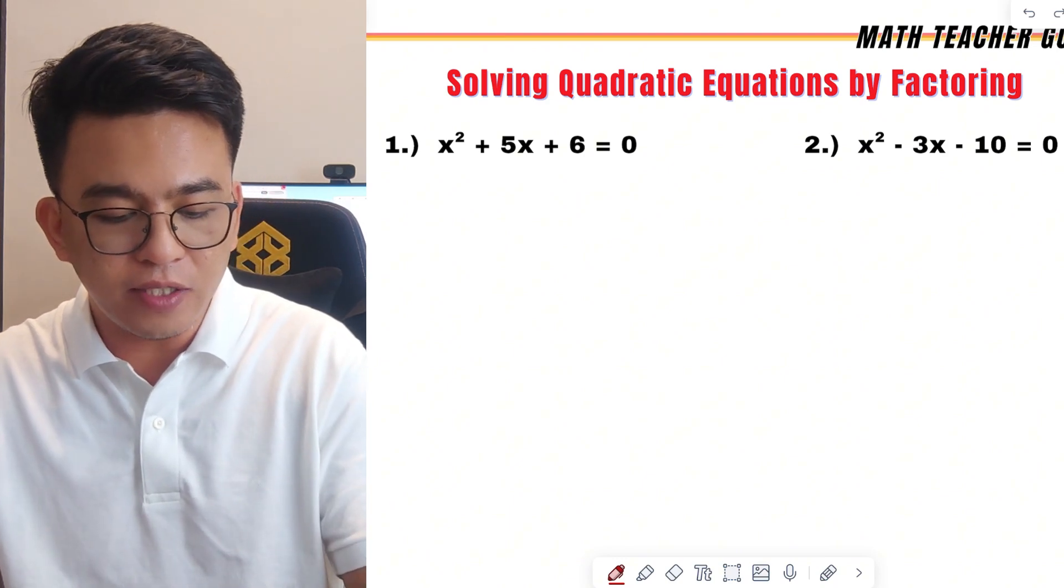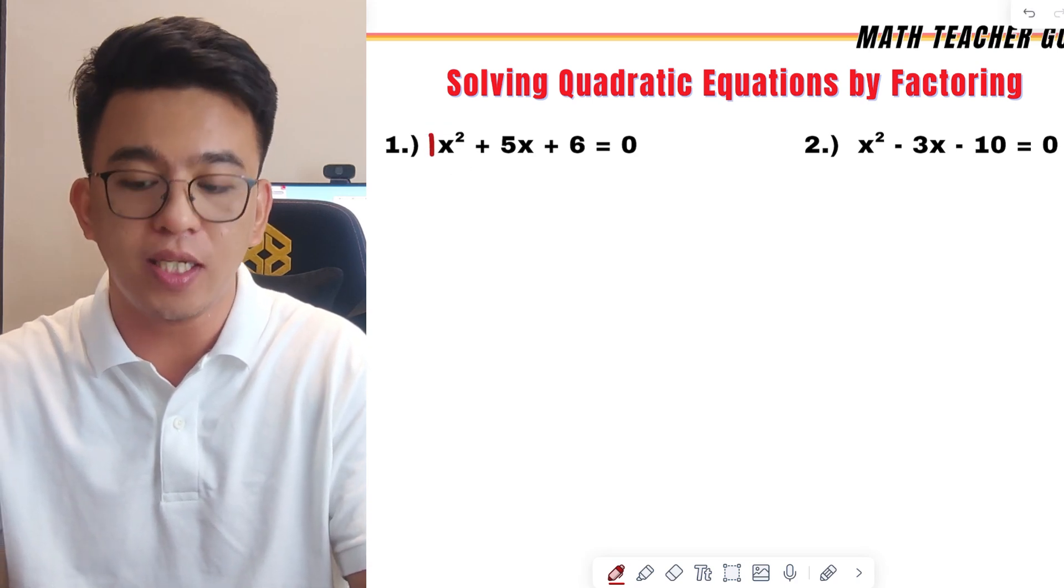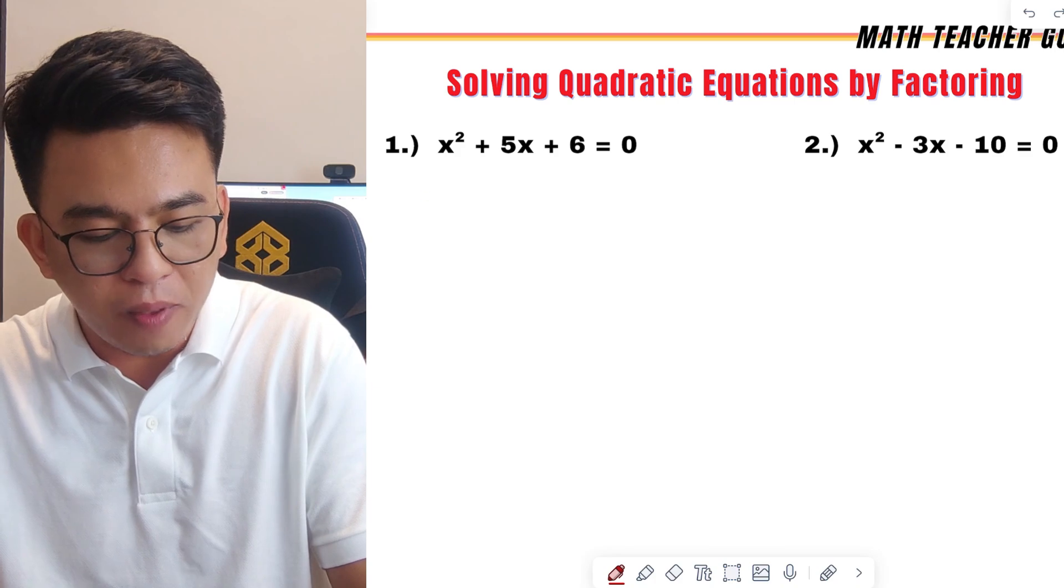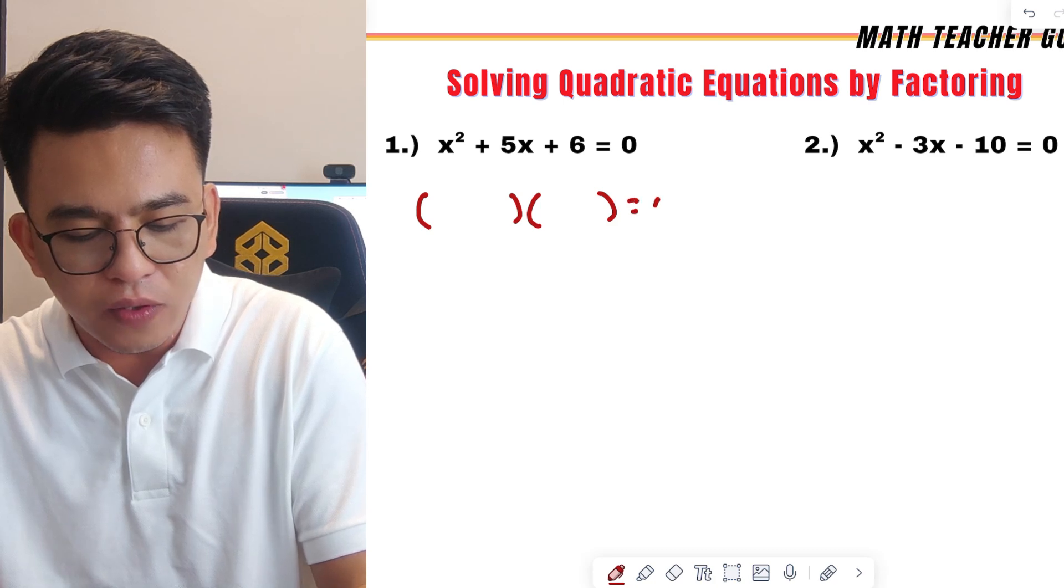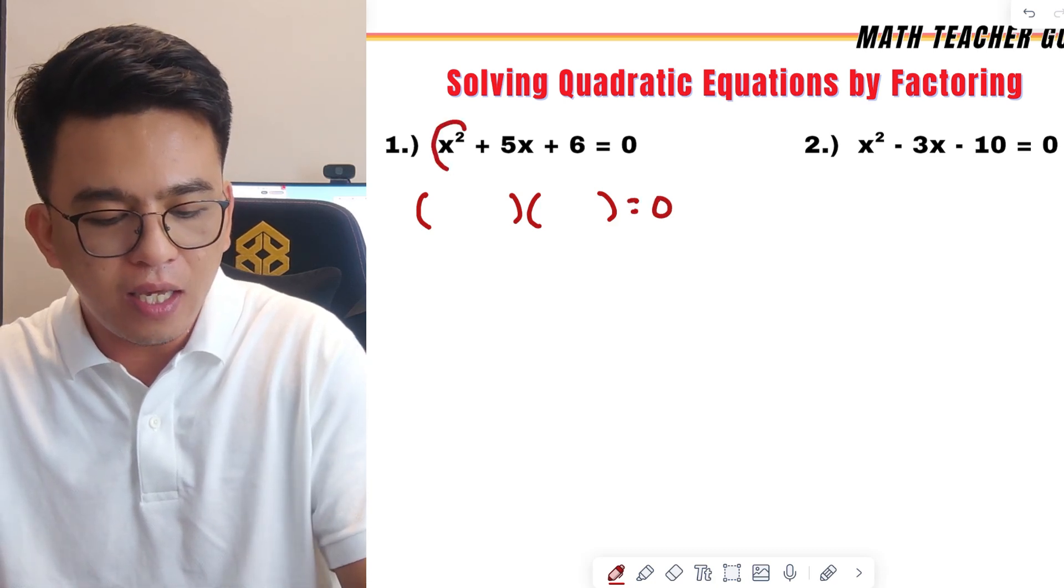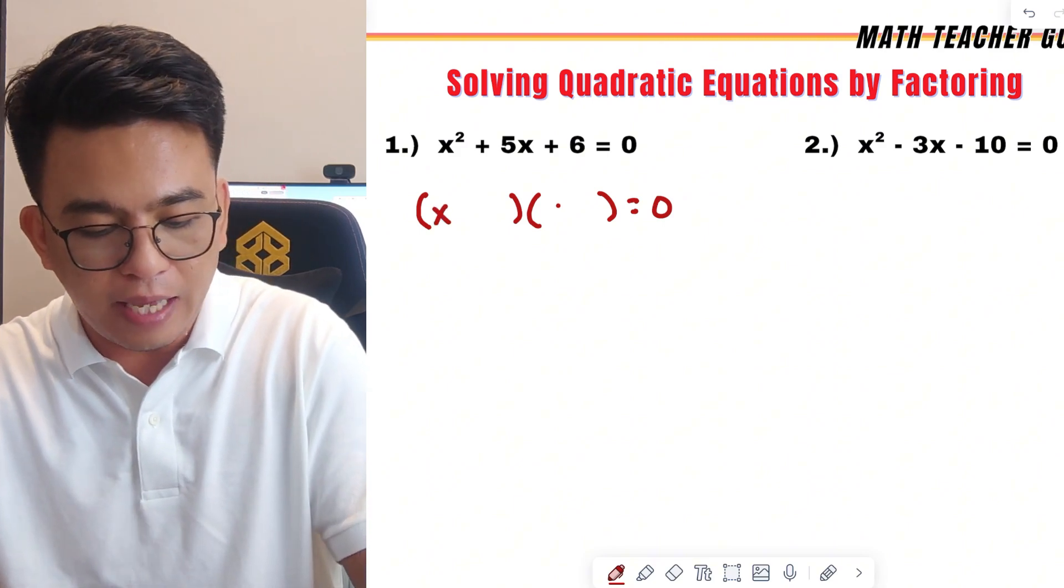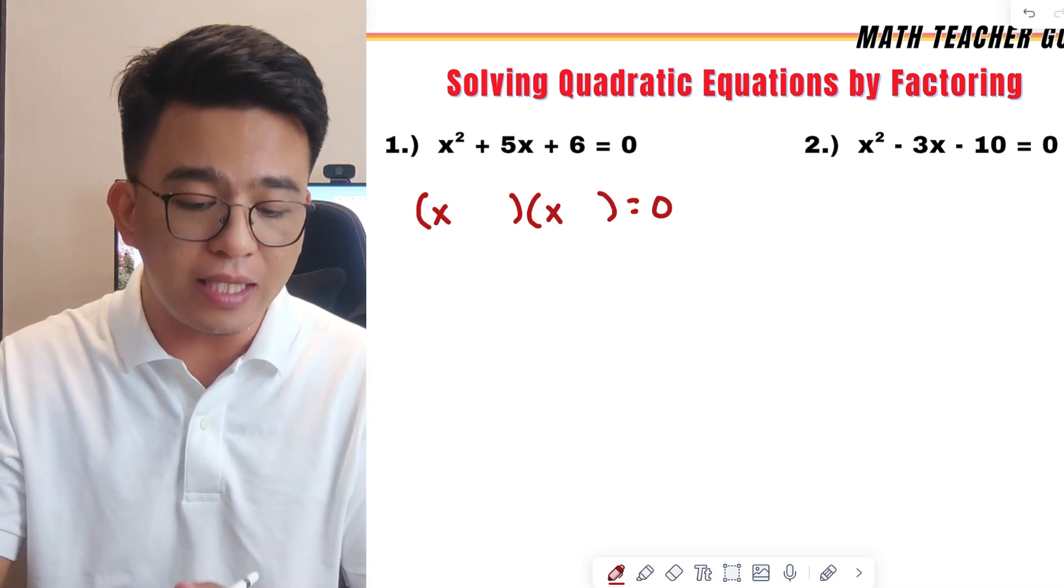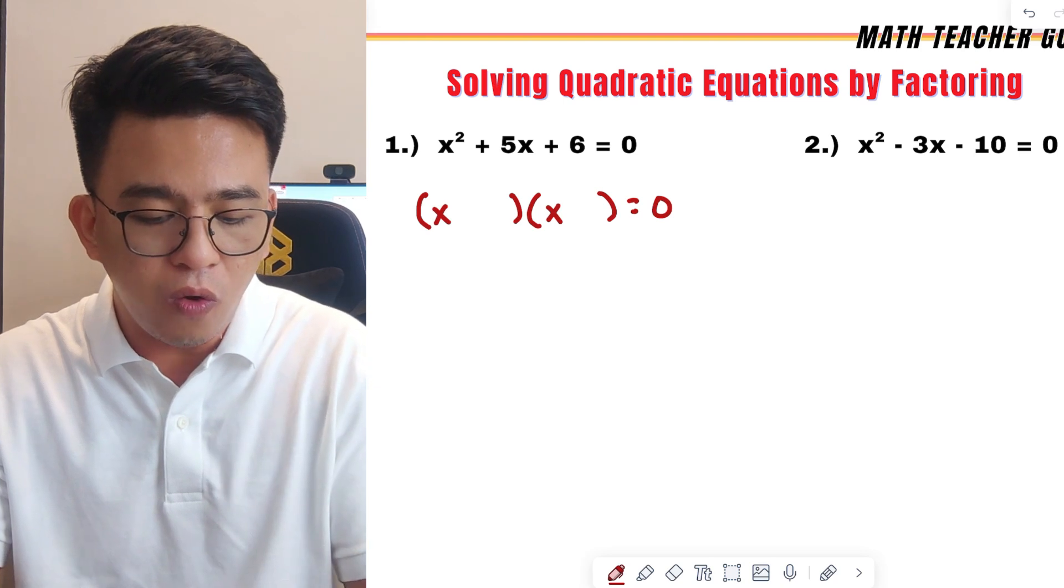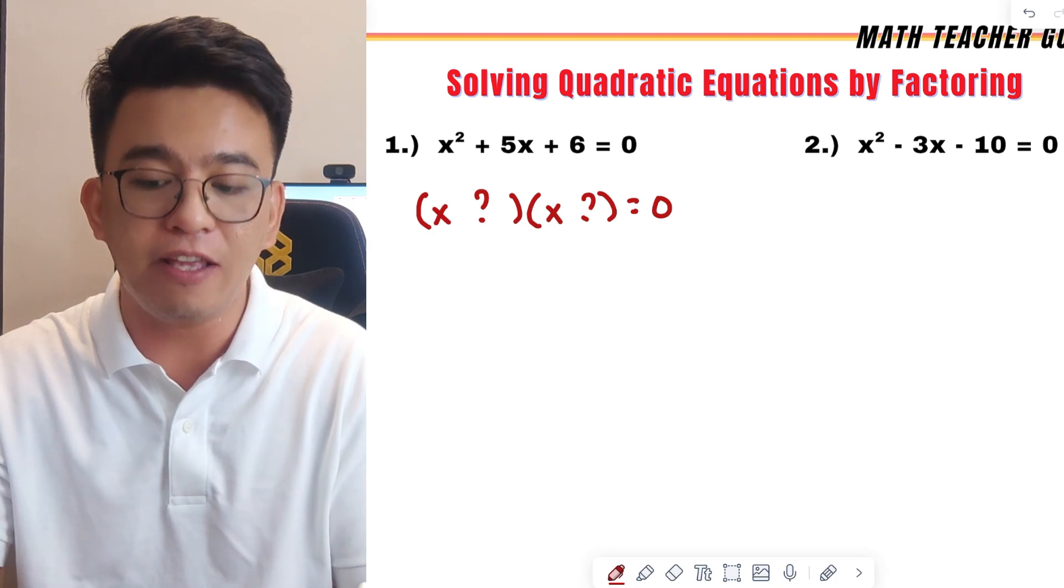Since the first term is x squared, or in other words, the value of a is 1, my technique here is to prepare two sets of parentheses here then equal to 0. Basically, I refactor out the x squared as x times x. Because x times x is simply x squared. Now, the problem is to figure out what must be the numbers here or the terms that we need to put in our factors.